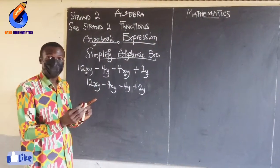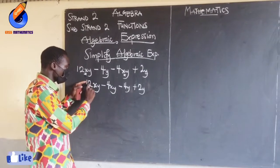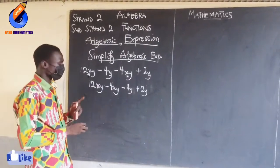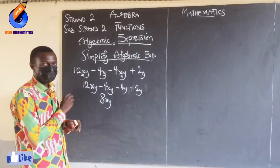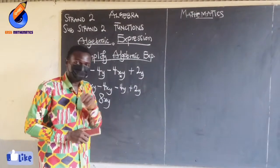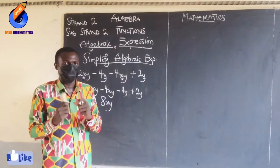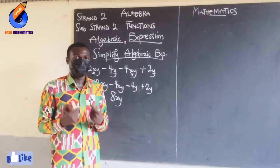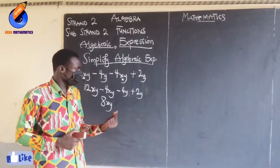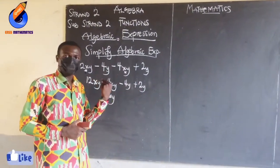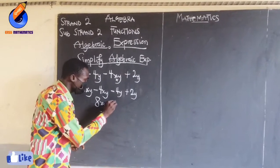Now after grouping like terms, you add or subtract them. For 12xy minus 4xy: 12 take away 4 gives me 8, so that gives me 8xy. For negative 4y plus 2y: when you see a negative in front of a number it means you are owing. So I owe 4 and I have 2 — if I settle my debt I am still owing 2, giving me negative 2y.